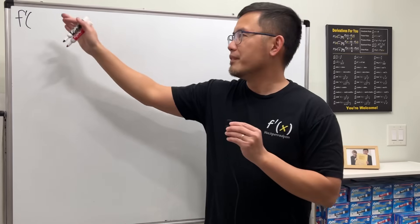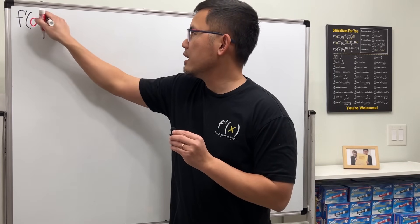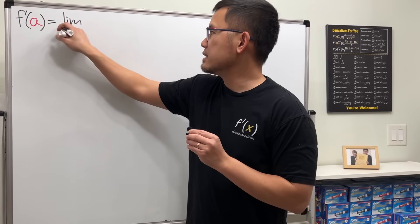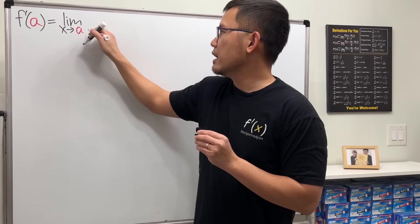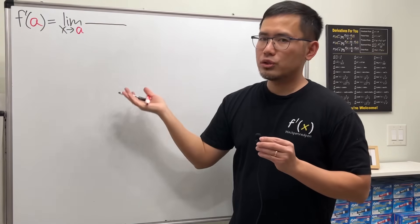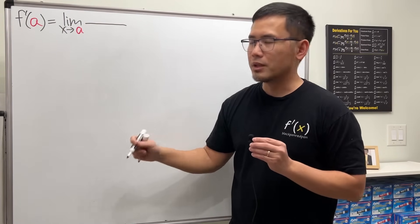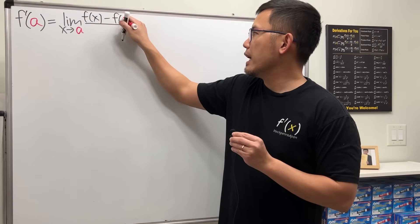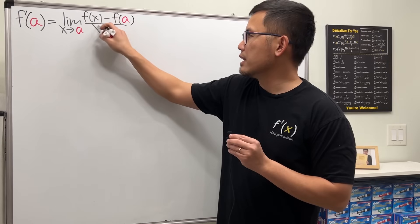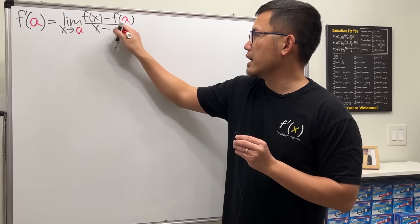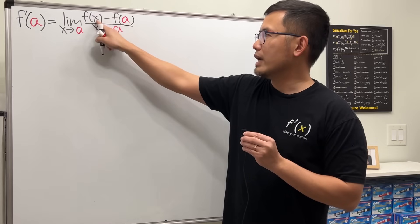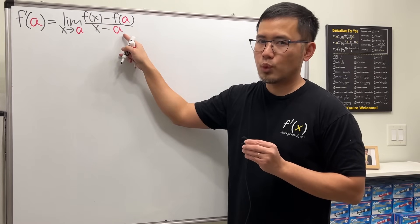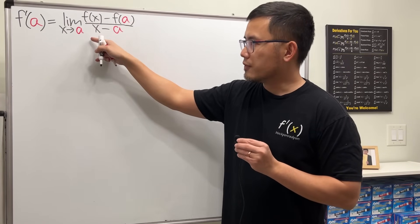Of course, we start with the definition of the derivative. f prime of a as a limit — this is the limit as x approaches a. The formula is f(x) minus f(a), all over x minus a. As you can see, this is essentially y2 minus y1 over x2 minus x1. This is the first version.